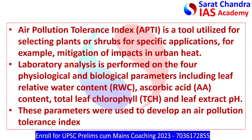Air Pollution Tolerance Index is a tool utilized for selecting plants or shrubs for specific applications, for example, mitigation of impacts in urban heat. Laboratory analysis is performed on four physiological and biological parameters including leaf-related water content, ascorbic acid content, total leaf chlorophyll, and leaf extract pH. These parameters were used to develop an Air Pollution Tolerance Index.